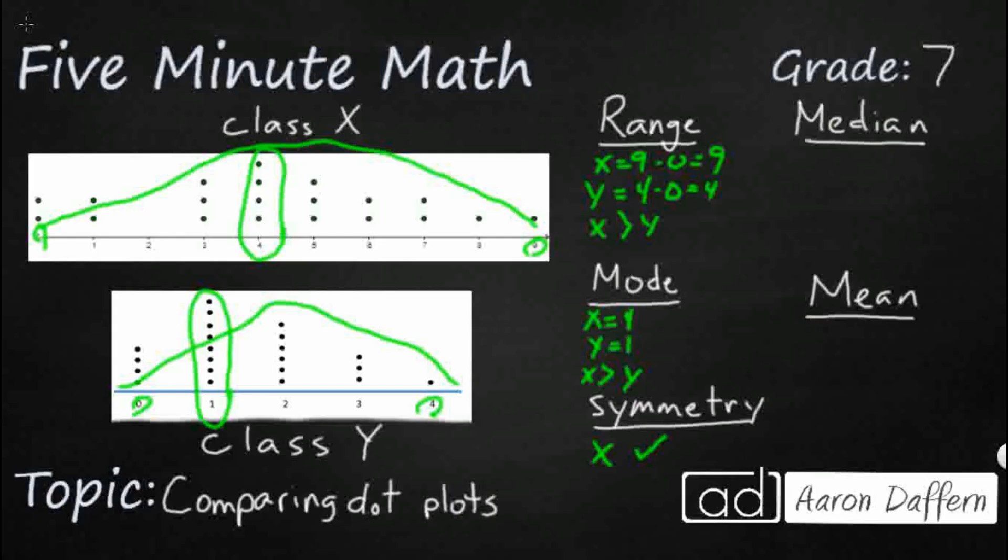So it is a little bit symmetrical there but for Y you notice it should be peaking right here at two but it peaks very early there with one. You see how this kind of sticks out right there. So I'm gonna say our Y is definitely not symmetrical but our X is symmetrical.